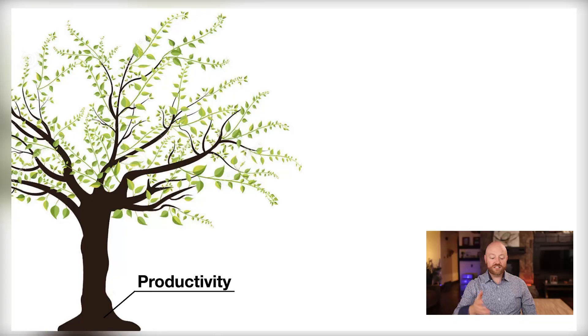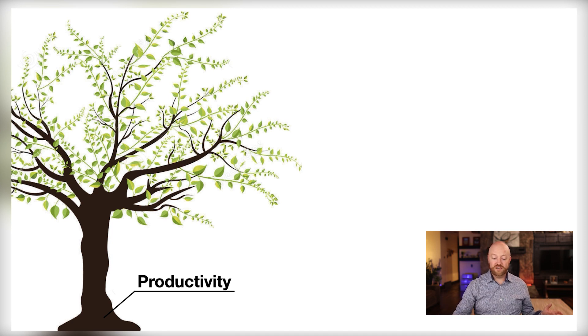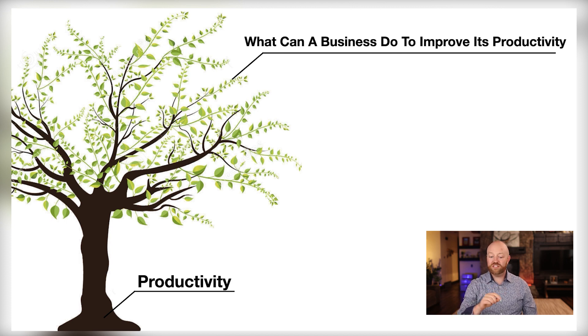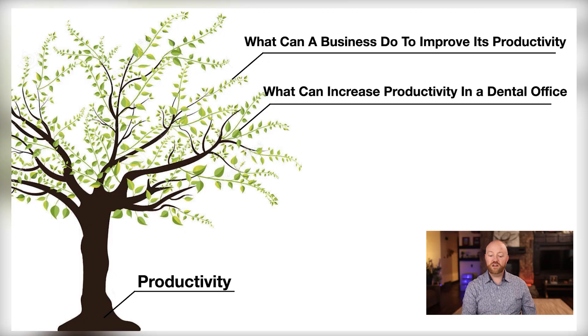Let me give you an example. Let's say your area of expertise was productivity — that would be the trunk, your broad area of expertise. One of the branches might be what a business can do to improve its productivity. Then the leaf — the question — might be something like 'what can increase productivity in a dental office?' That's an 8-word phrase and it's specifically about productivity in a dental office.